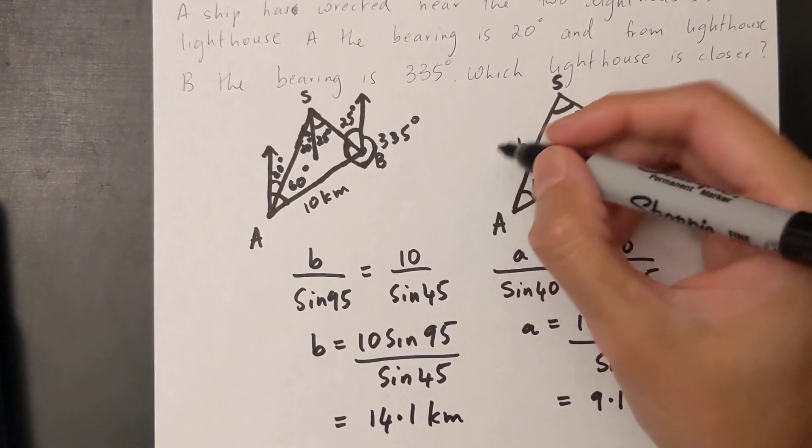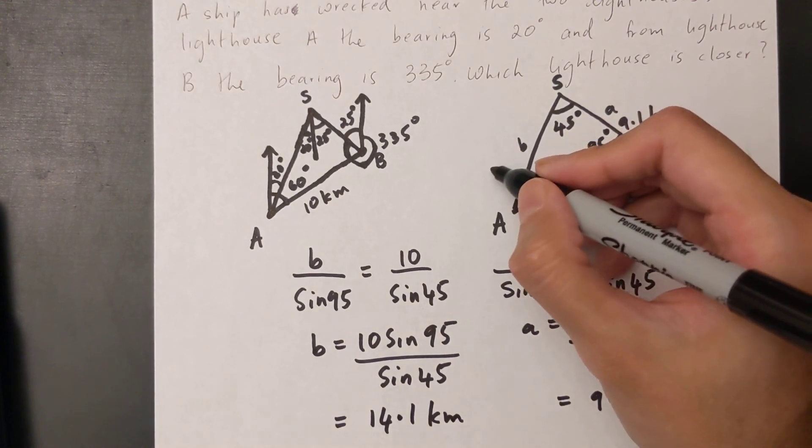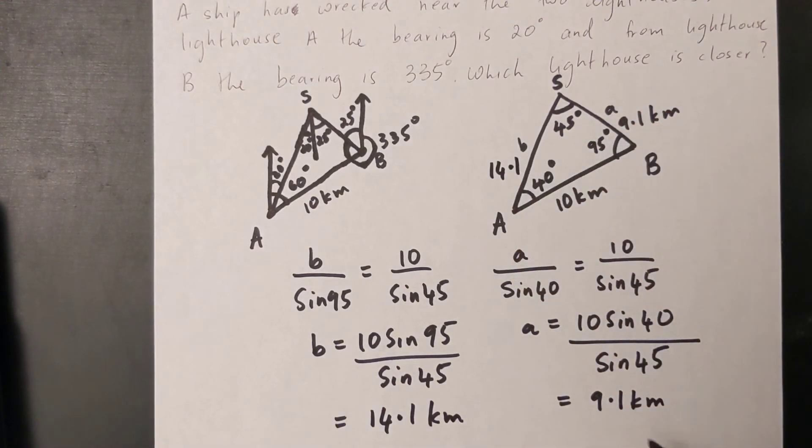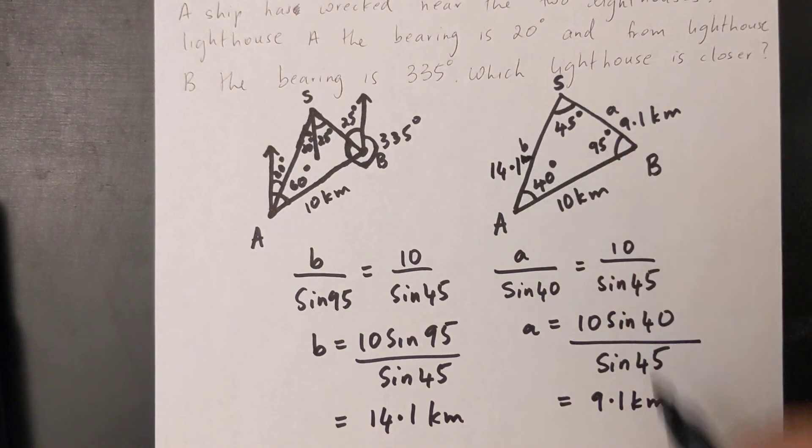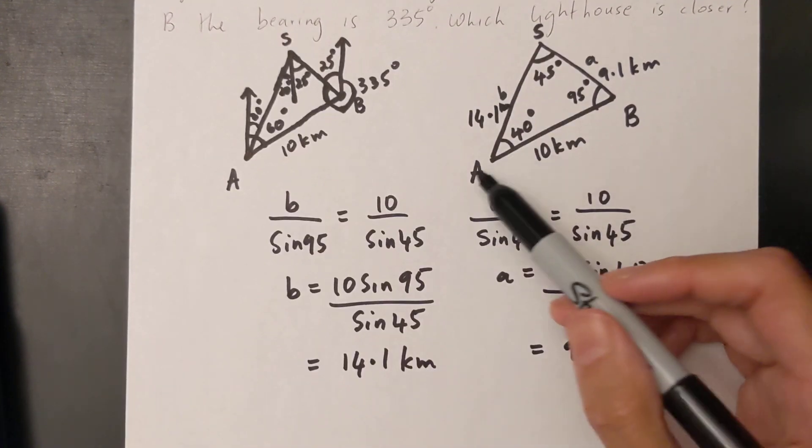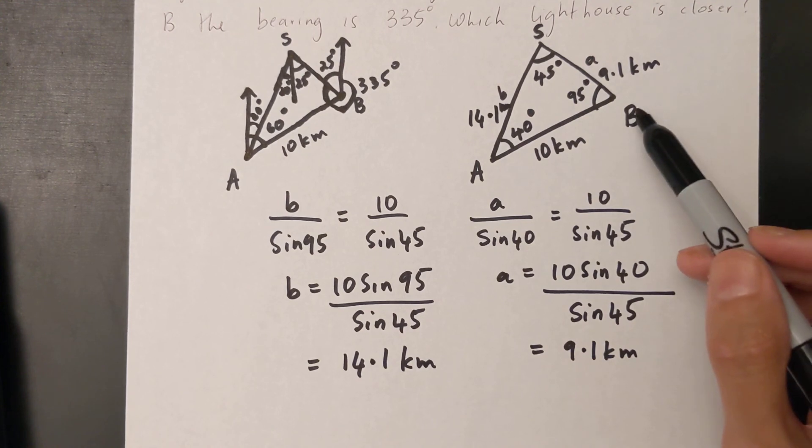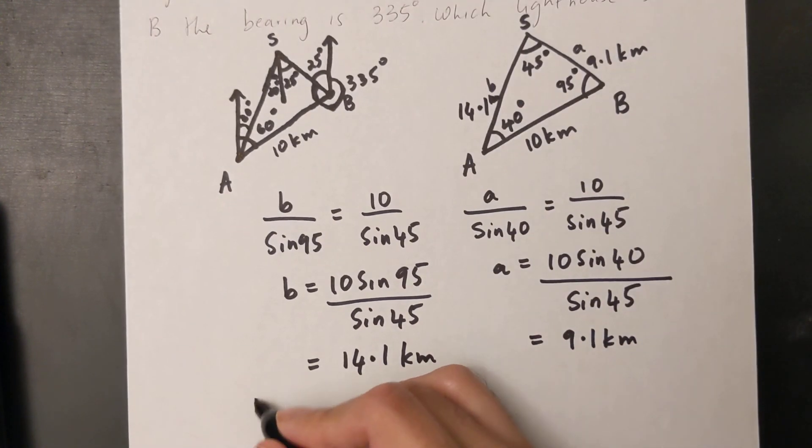So I'll label that back into my triangle over here 14.1 km. So now if we compare the two lighthouses we can tell that lighthouse B is closer to the shipwreck.